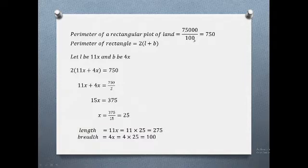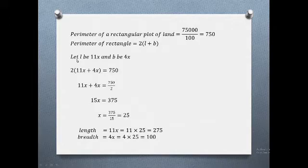The perimeter of a rectangular plot of land is known. The perimeter of the rectangle is 2(L plus B), and the ratio of length to breadth is 11 is to 4. So the length is 11x and the breadth is 4x.